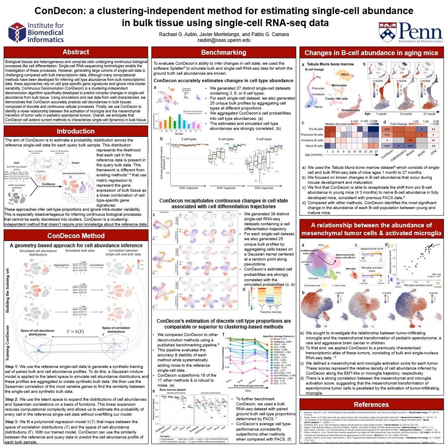Biological tissues are heterogeneous, comprising cells undergoing continuous biological processes like cell differentiation. With single cell RNA sequencing technology, it is now possible to investigate these dynamics. However, generating large cohorts of single cell data is challenging compared to bulk transcriptomic data. Although many computational methods have been developed for inferring cell type abundance from bulk transcriptomic data, these approaches rely on gene expression signatures for each cell type and ignore intracluster variability.